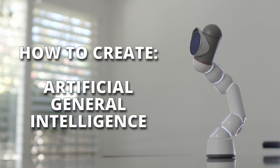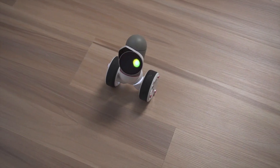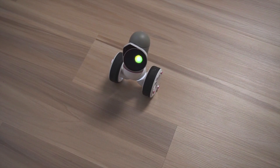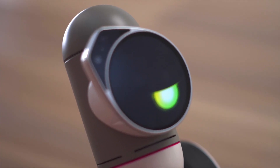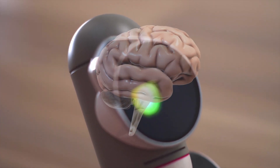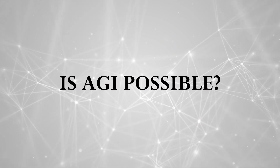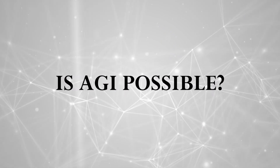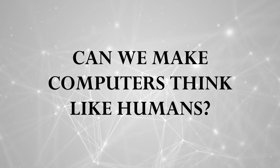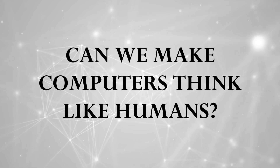How to create AGI. I believe artificial general intelligence is possible, and this video shows how we can make computers which think the way the human brain does. Is artificial general intelligence even possible? Can we make computers which think the way the human brain does?